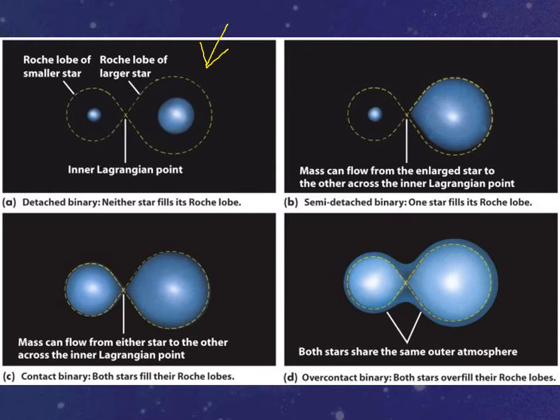There's something we call semi-detached stars, in which one star has filled its Roche lobe and the other star has not. Now what happens here though is that as this star fills its Roche lobe, mass at that point can actually spiral into the other star.